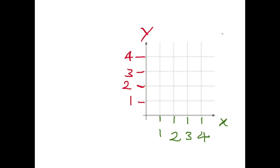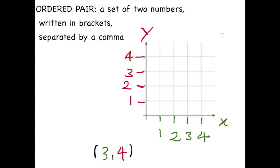The location of a point on a coordinate plane is described by an ordered pair. What is an ordered pair? An ordered pair is a set of two numbers, written in brackets, separated by a comma.